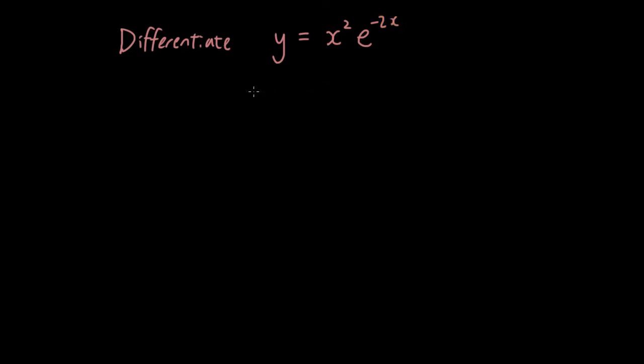You would realize that this is a product of two functions, because I have this first part which is a function and the second part which is also another function. So let's say the first part is f and the second part is g. y equals f times g.